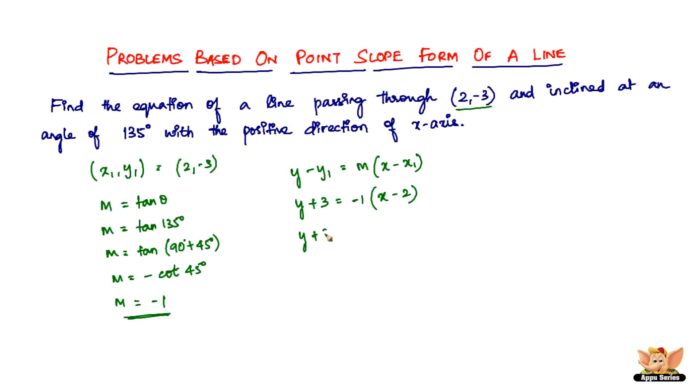Simplifying: y + 3 = -x + 2. Moving everything to the left-hand side: x + y + 3 - 2 = 0, which gives us x + y + 1 = 0.